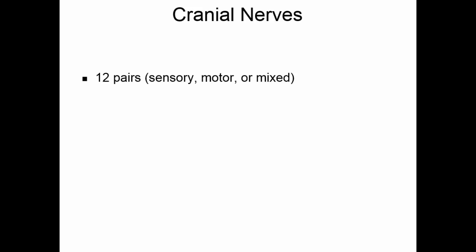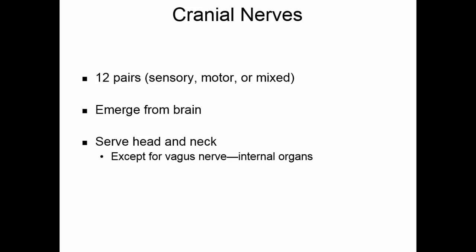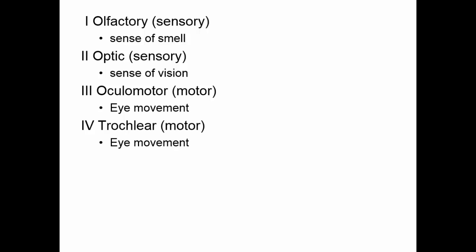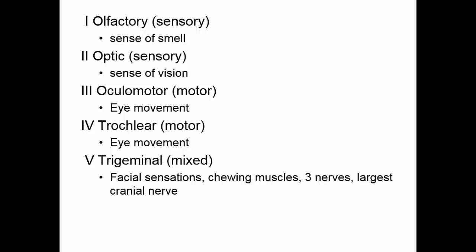There are 12 pairs of cranial nerves — some are primarily sensory, some primarily motor, and some are mixed. They emerge from the brain and serve the head and neck, with the exception of the vagus nerve. Cranial nerve I is the olfactory nerve, a sensory nerve for smell. Cranial nerve II is the optic nerve, a sensory nerve for vision. Cranial nerve III is the oculomotor, a motor nerve for eye movement. Cranial nerve IV is the trochlear, also a motor nerve involved in eye movement. Cranial nerve V is the trigeminal — a large mixed nerve covering much of the face, involved in facial sensation and chewing muscles. It has three large branches and is the largest cranial nerve.